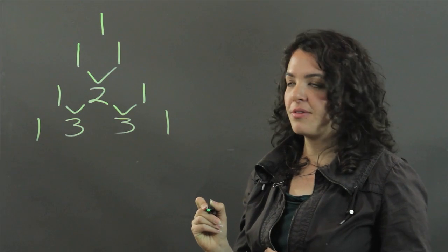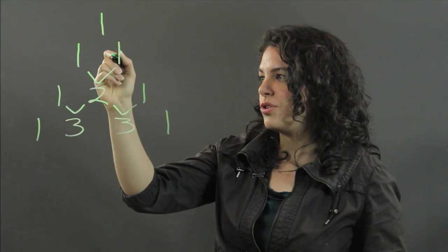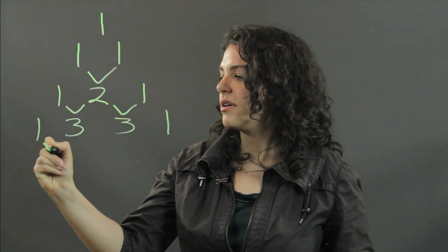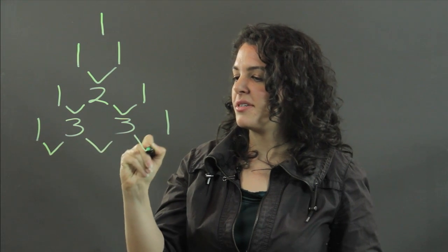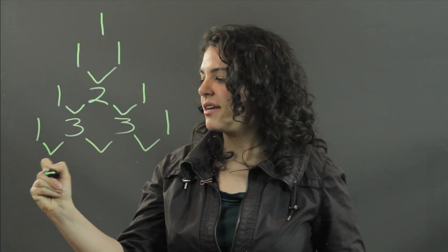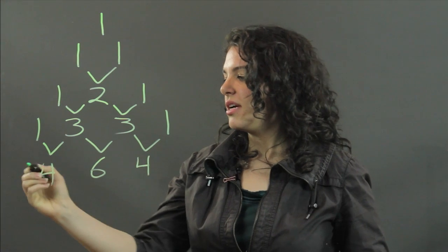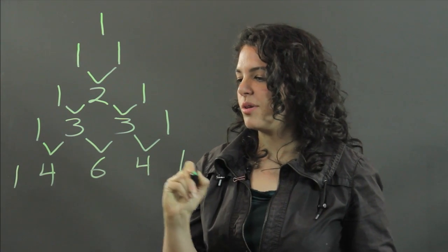Now, to get the fifth line, because we have one, two, three, four lines so far, we've got one more to go. We add these elements. One and three add to four. Three and three add to six. Three and one add to four. We begin and we end with one.